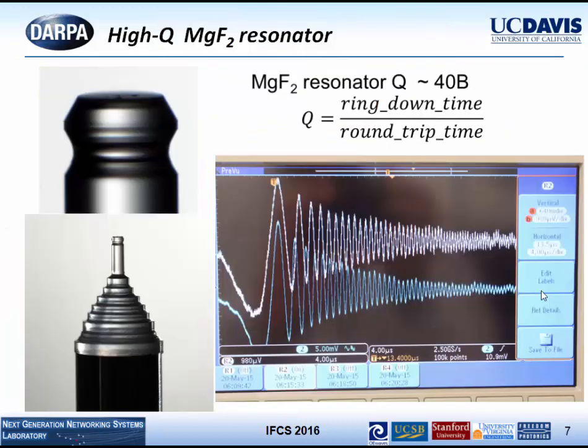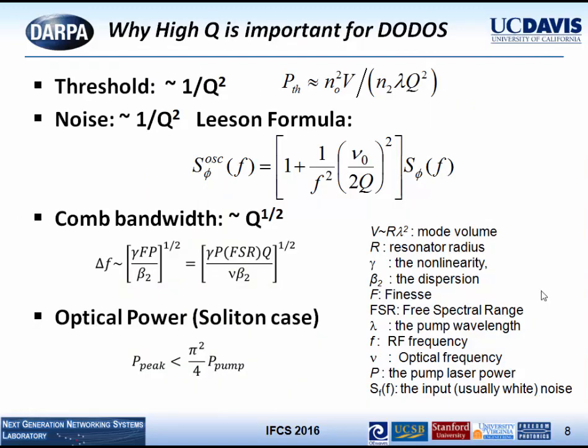For the resonators to work in the soliton regime, we're using macro resonators, and you can get a Q of 40 billion measured by ring-down at OE Waves. You can fabricate these in various sizes. The high Q is very important because the threshold for nonlinear frequency comb generation goes as 1/Q². Noise tends to go down as Q². The comb bandwidth when generating an octave-spanning comb goes like √Q. In addition, per-comb-line power limitation goes like 1/N².